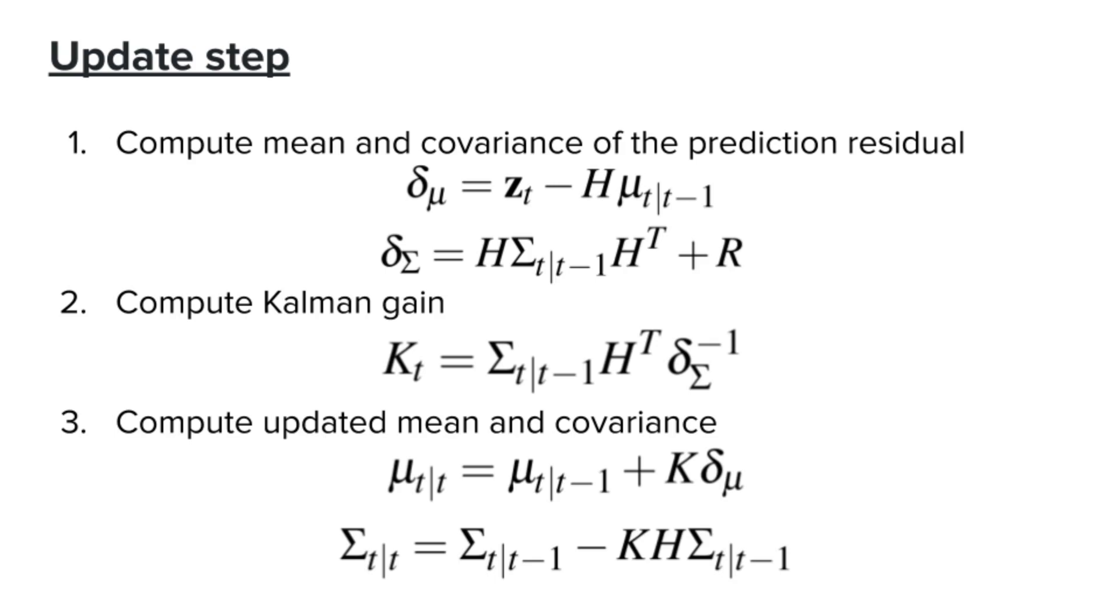And as we can see here, if the Kalman gain is high, the new belief is largely affected by the sensor measurement. Again, we're not going to go through the derivation that gives us all the equations for the update step. But I hope this can still help us to at least understand how Kalman Filter can be used, and what is actually needed to implement it. Now, let's take a look at a concrete example to see how we can use these equations.